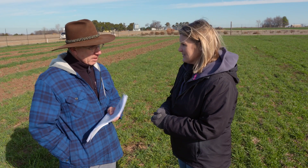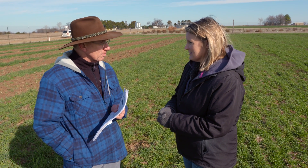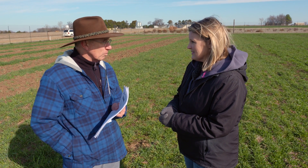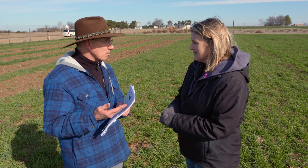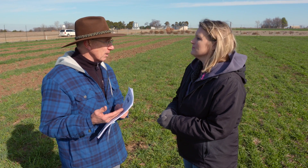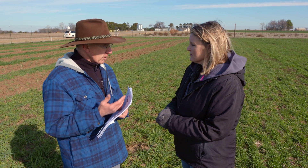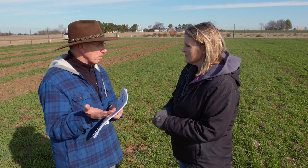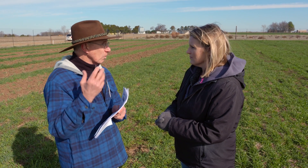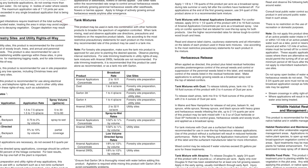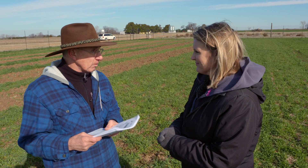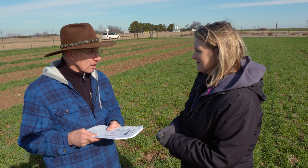The label will also talk about other things that might be added to the spray mixture, like adjuvants or spreader stickers, or if it can be tank mixed with other materials. It will actually list the materials you can tank mix it with and make suggestions. So the label gives you a lot of information.